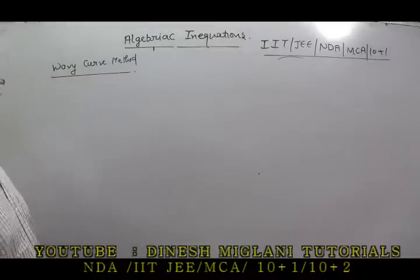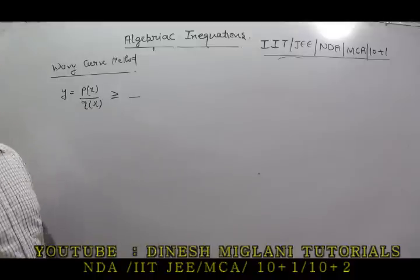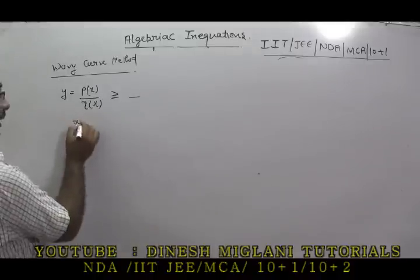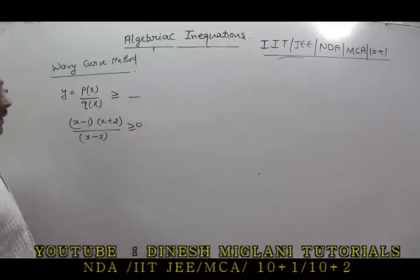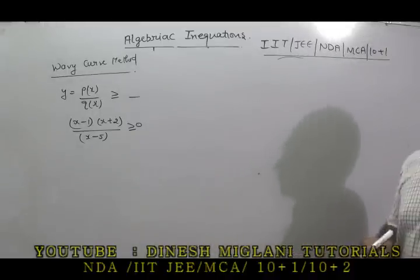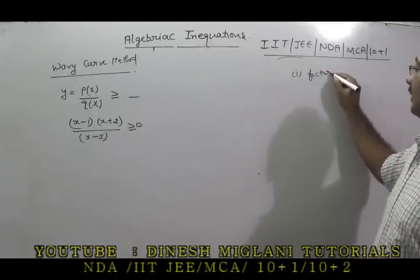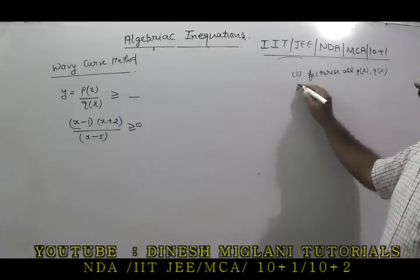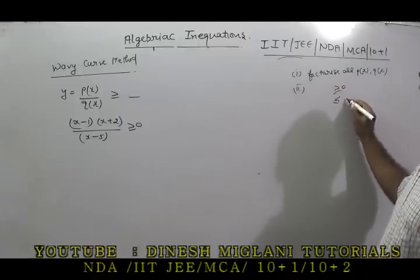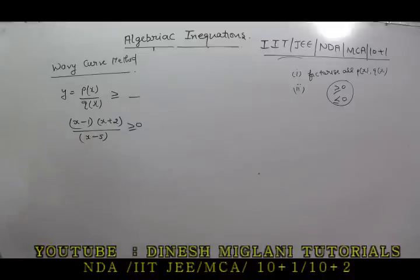This method applies to problems where the expression is in the form P(x)/Q(x), which is either ≥ some number or ≤ some number. For example: (x−1)(x+2)/(x−5) ≥ 0 — find the interval for x. For answering these problems, we have basic rules. First rule: factorize all P(x) and Q(x). Second: if there is a constant number, take it to this side, solve it, and convert to factorized form.